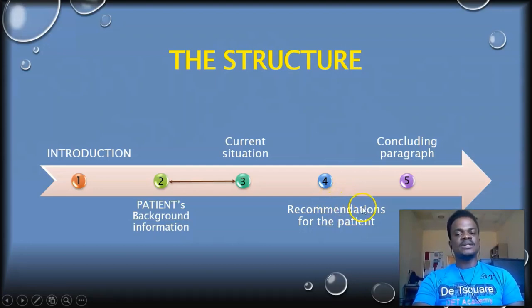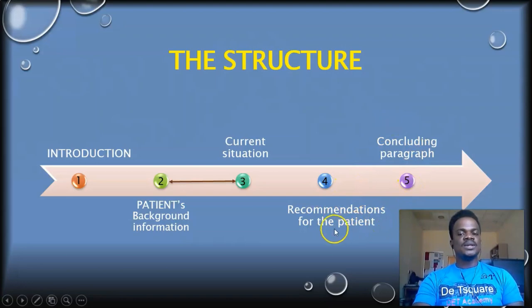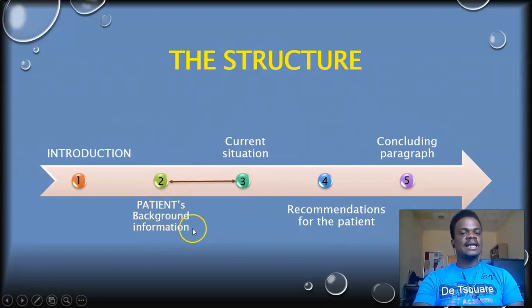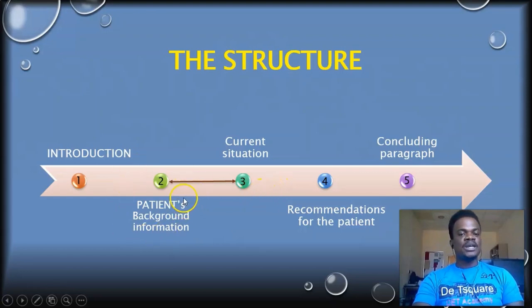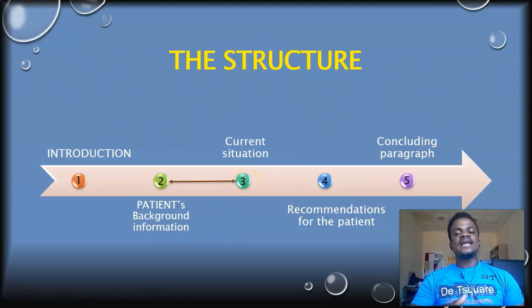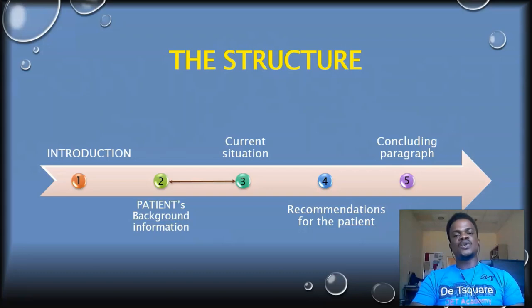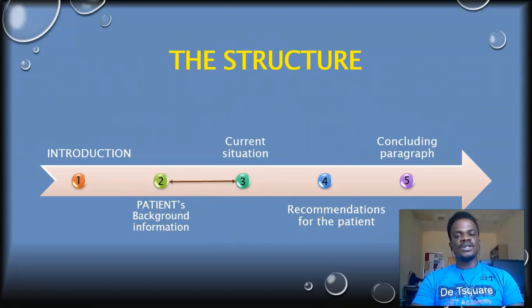Sometimes the patient background information can actually come after the current situation, and sometimes the patient information can also come after the recommendations. The most important thing is to organise your paragraphs according to importance — the important paragraphs should come first before the less important ones. By doing so, the flow of information and sequence of events will flow naturally.